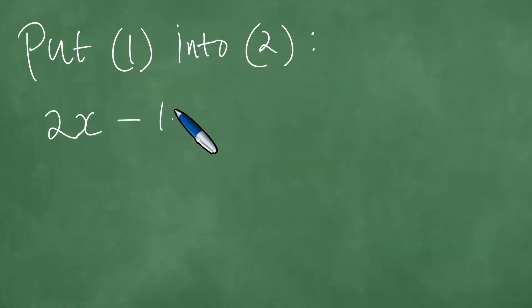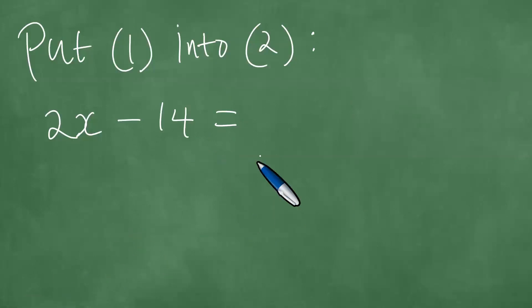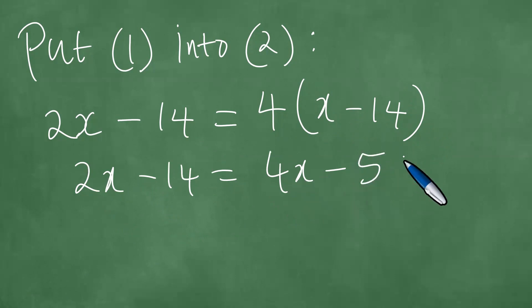2x minus 14, which equals four into x minus 14. Four into x minus 14. This is therefore 2x minus 14 equals 4x minus 56.